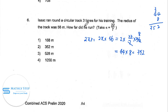And Isaac actually ran 3 times, 3 rounds. So it's 352 times 3, which is equal to 1056 meters. We choose option 4.